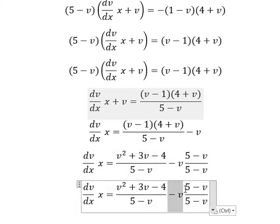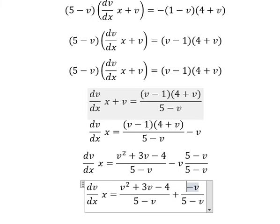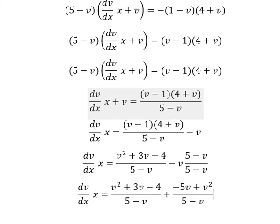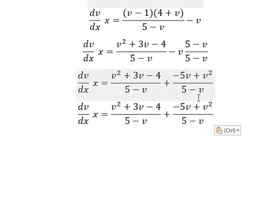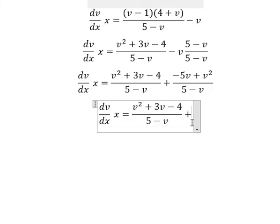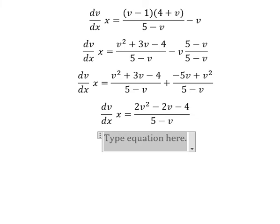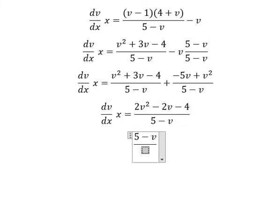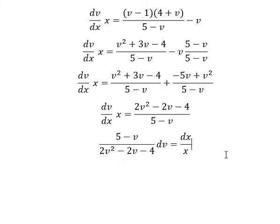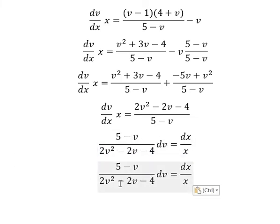Negative v multiplied by 5 and negative v — we combine two fractions here. Then we separate variables: dx and x go on the right side. We will have (5 minus v) over (2v squared minus 2v minus 4). We factor out number 2 from the denominator.